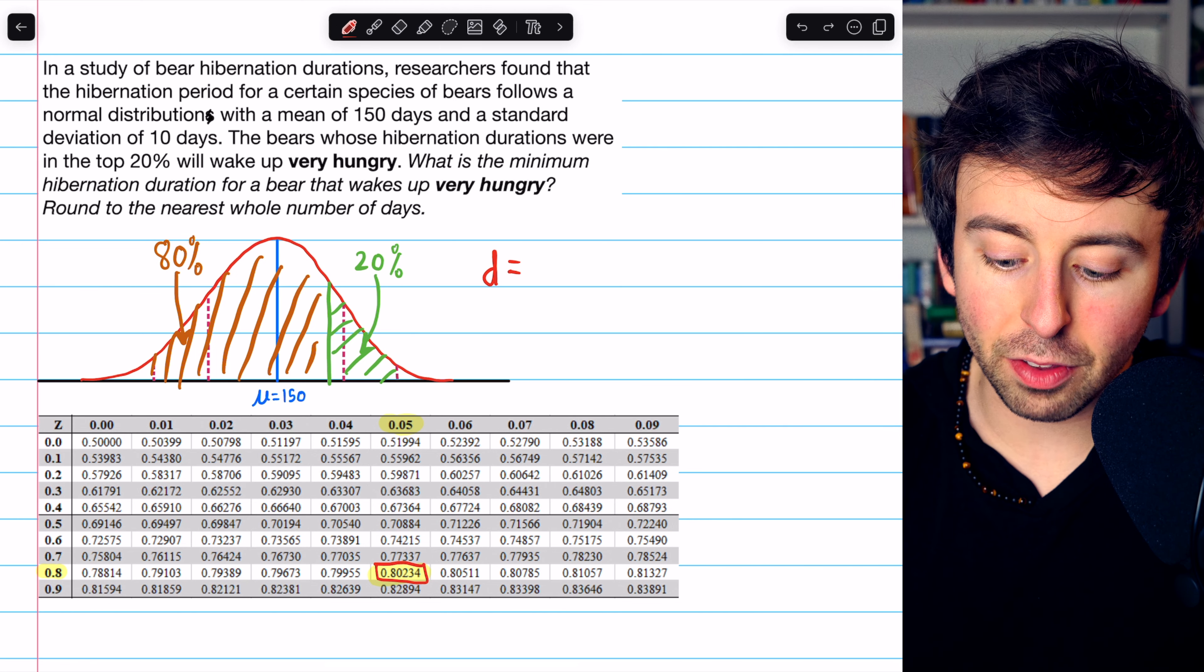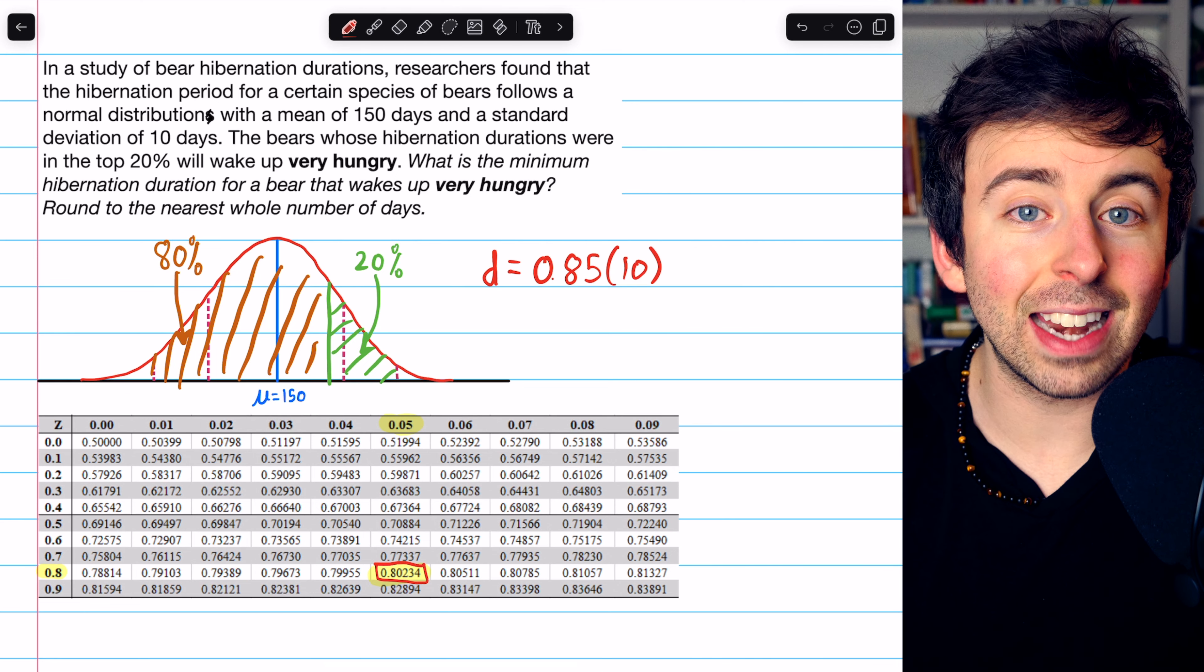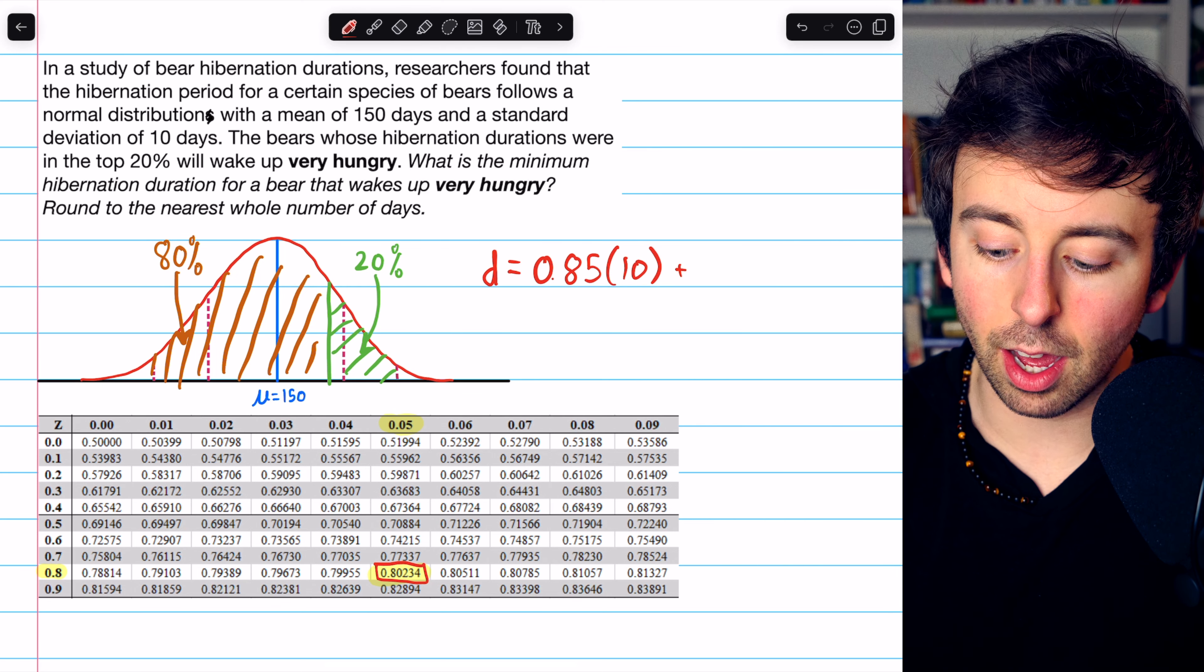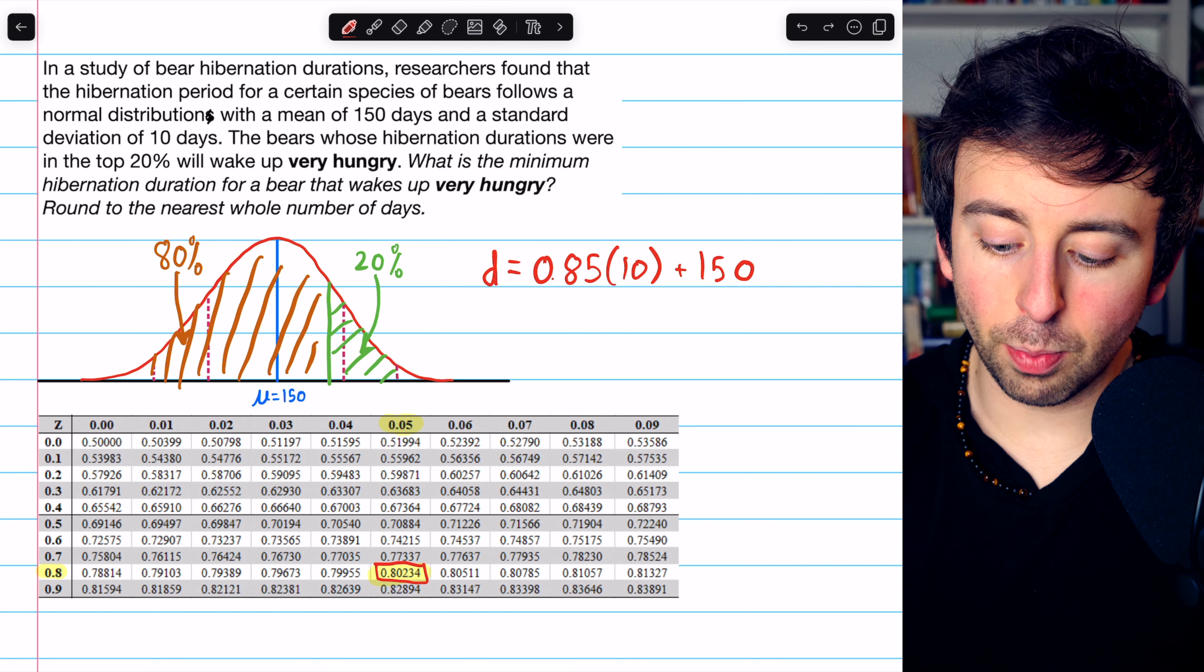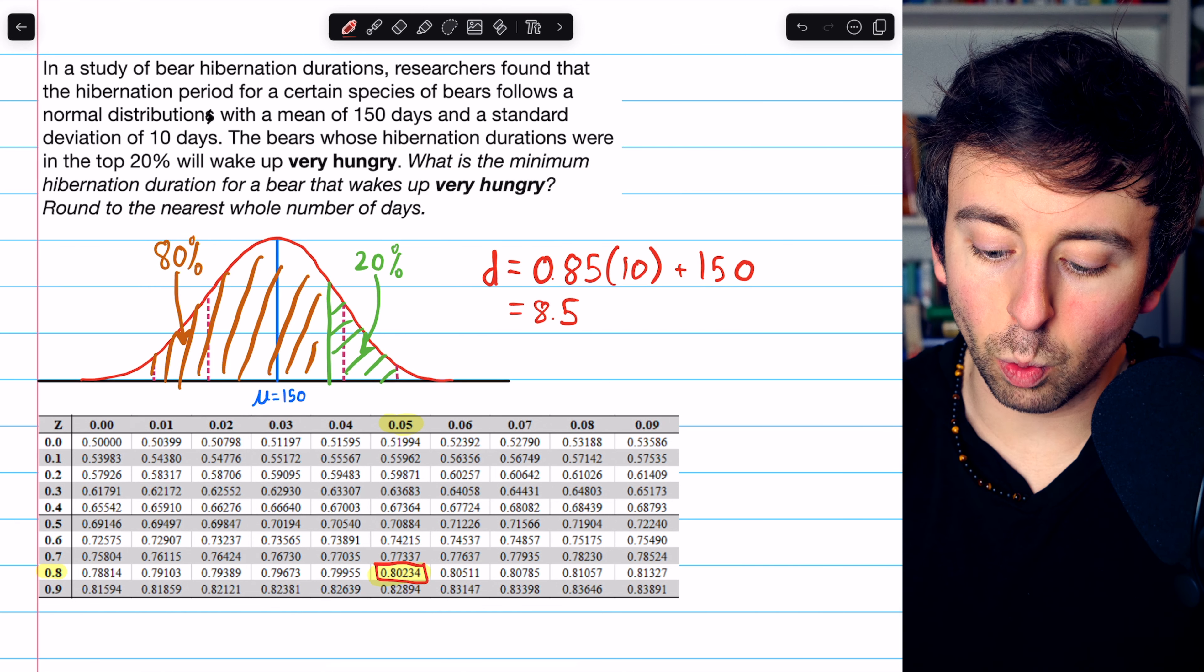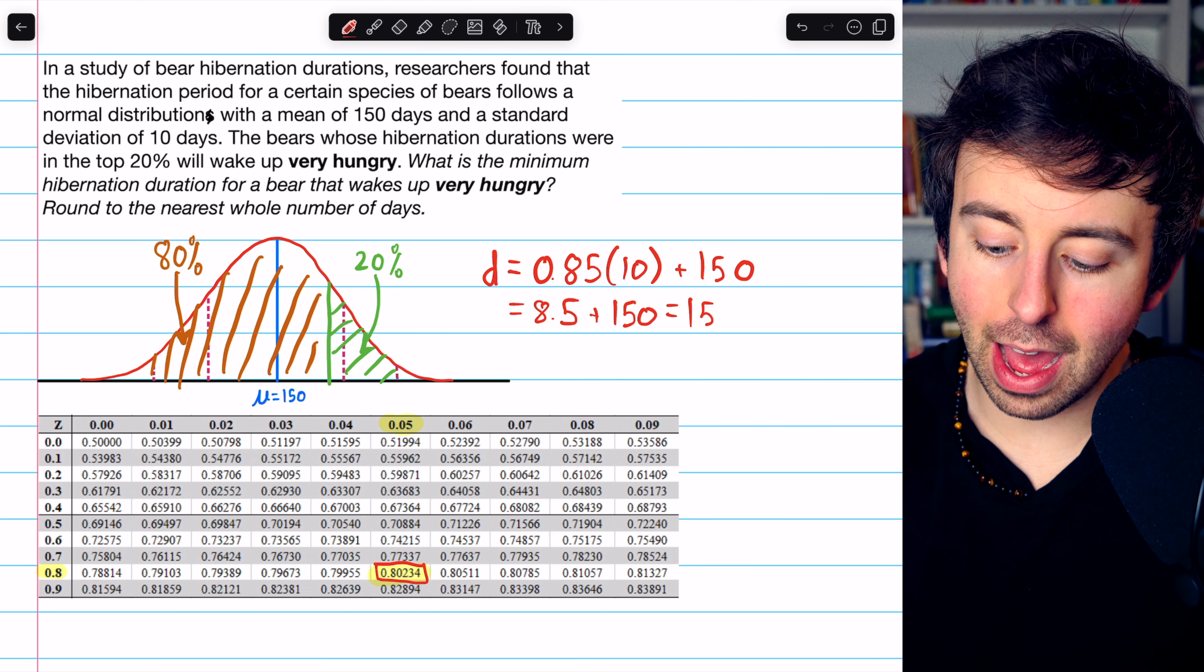So this would have to be 0.85 standard deviations, standard deviation is 10 in this case, above the mean. So plus the mean of 150. So this is 0.85 times 10, which is 8.5 plus 150. That's 158.5.